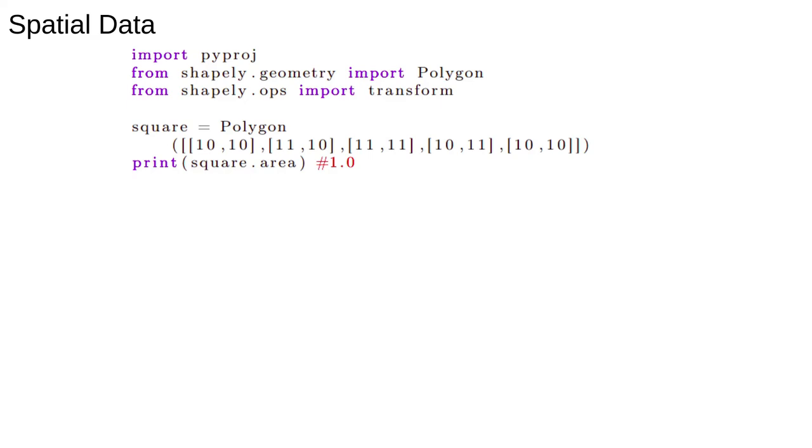To see how to do this in code, let's make a square. Remember, these coordinates are supposed to be latitude and longitude, so this is not actually a square.